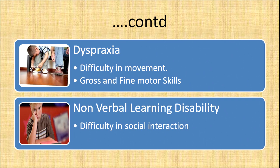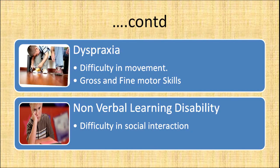Then comes dyspraxia. As we can see in the picture, a child is struggling to tie his shoelaces; he is unable to use his fingertips, meaning he may have difficulty in fine motor skills. So dyspraxia is difficulty in movement, which can be related to gross and fine motor skills. Lastly, non-verbal learning disability is difficulty in social interaction. As you can see in the picture, the child is sitting alone and doesn't want to communicate with other peers.